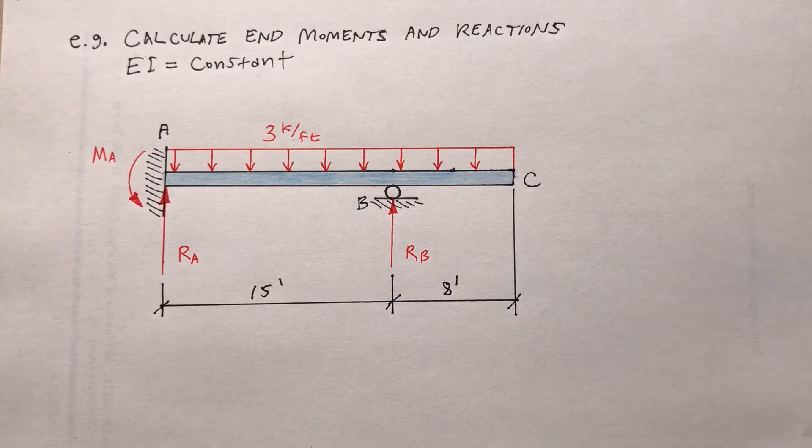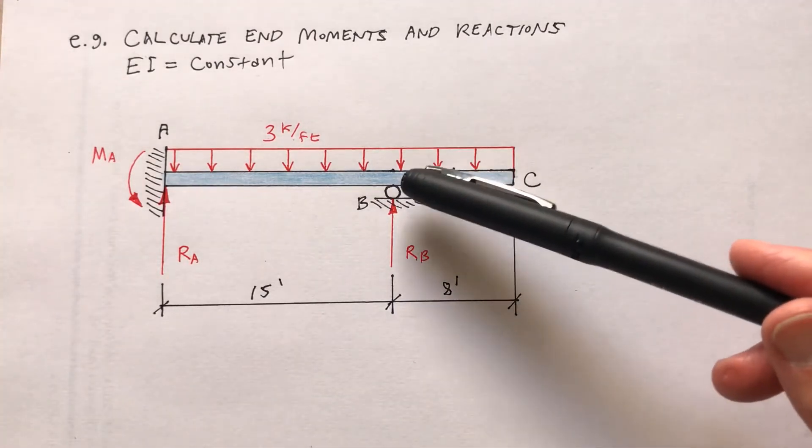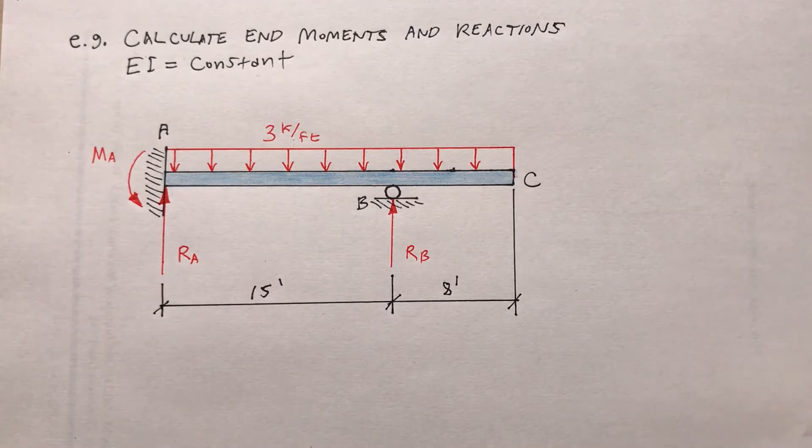For the overhang I'd apply the fixed end moment at the overhang, but the distribution factor and the carryover moment would be zero. So I do have to find the fixed end moment at B for that cantilever segment, however the distribution factor and carryover moment would be zero for purposes of that overhang.